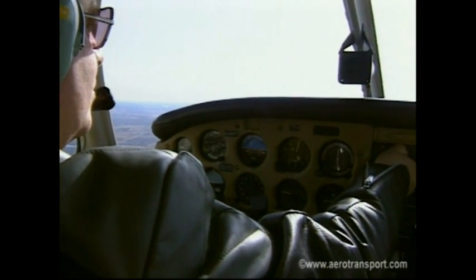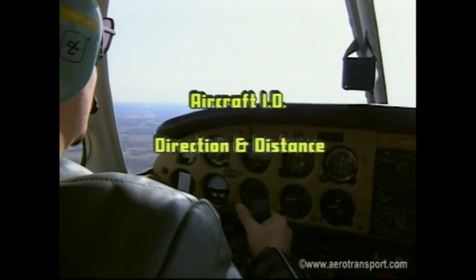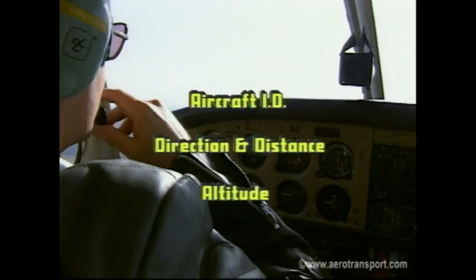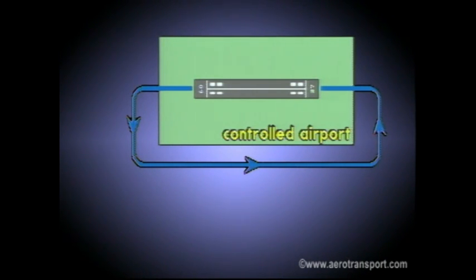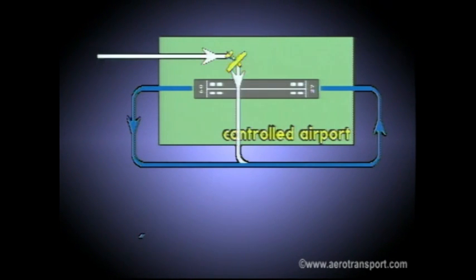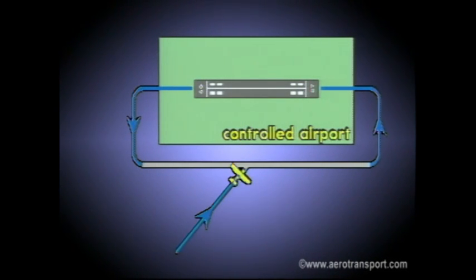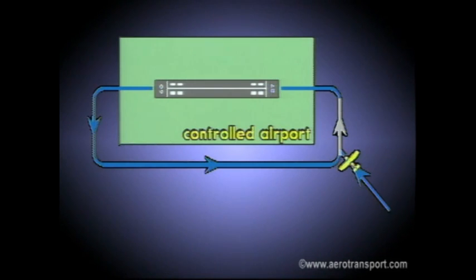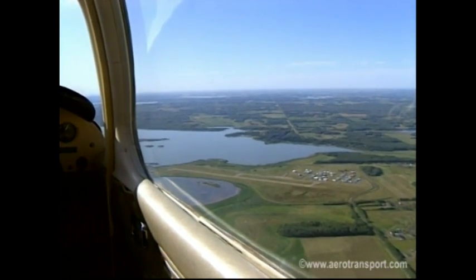When returning to the circuit at a controlled airport, first advise the control tower of your identification, direction and distance from the airport, as well as altitude and your request. This should be done prior to entering the control zone. When given clearance, you're expected to join the circuit downwind at circuit height — 1,000 feet. The cleared-to-circuit instruction allows you to make a right turn if joining crosswind, or a partial right turn downwind. You may also be given clearance to join on base or for a straight-in approach on final.